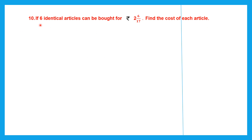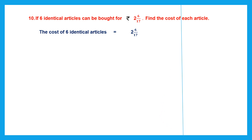Question 10. If 6 identical articles can be bought for rupees 2 and 6 by 17, find the cost of each article. So here we've been given the cost of 6 articles and we've been asked to find the cost of each article — that means 1 article. Whenever the cost of many is given and you're asked to find the cost of 1, it is a division word problem.